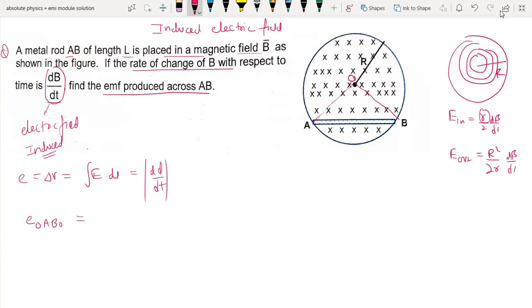This will be equal to d by dt into flux. So flux will be B into this area. Length is L, and we don't know anything else.